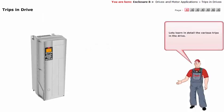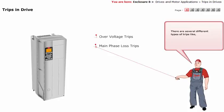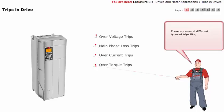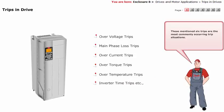Let's learn in detail the various trips in the drive. There are several different types of trips, like over-voltage trips, main phase loss trips, over-current trips, over-torque trips, over-temperature trips, inverter time trips, etc. These 6 trips are the most commonly occurring trip situations.